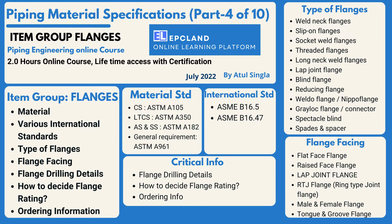Then we look into international standards — the various clauses for B16.5 and B16.47 with respect to flanges. Those will be covered, along with some critical information regarding flange dimensions, flange ratings, and ordering information which a purchaser has to prepare so that the manufacturer can understand what kind of flanges they are looking for.